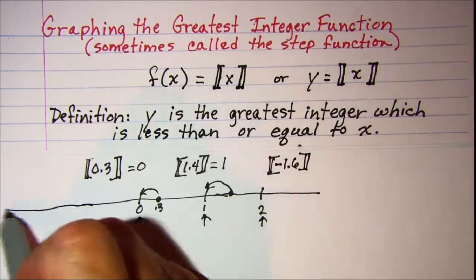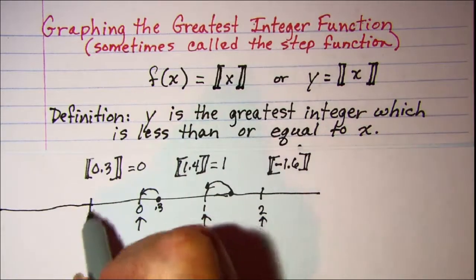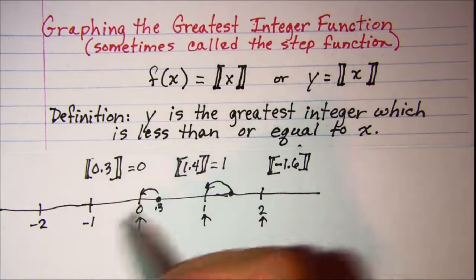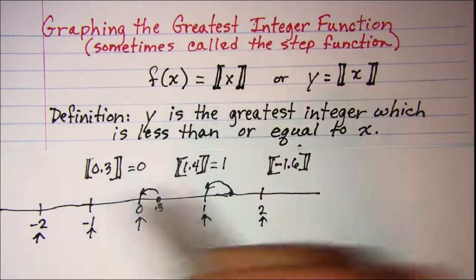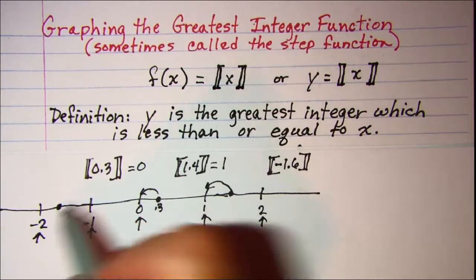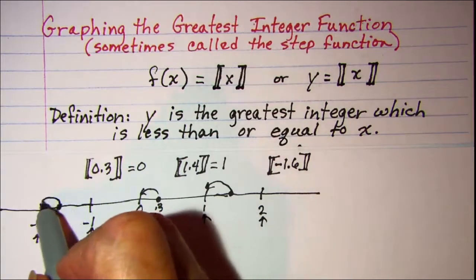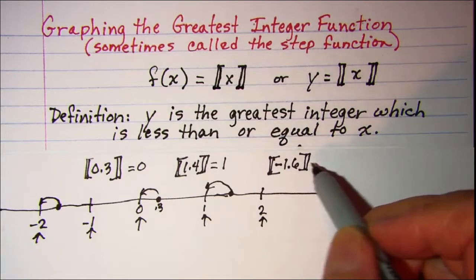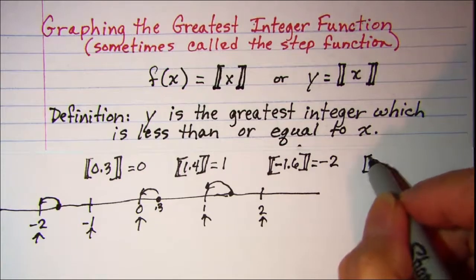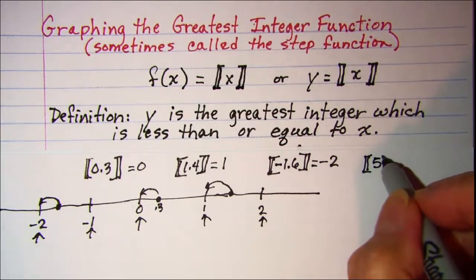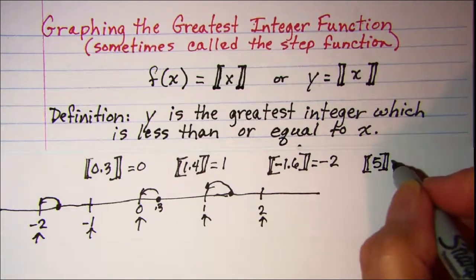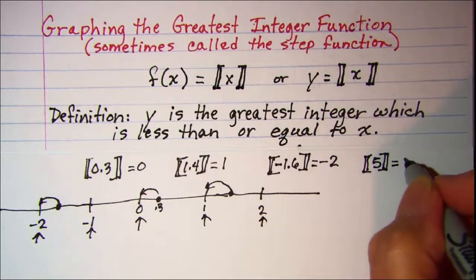Now if we looked at the greatest integer of negative 1.6, let's extend our number line to the left. Here we have negative 1 and negative 2 as integers. Negative 1.6 is about here on the number line, so the greatest integer of negative 1.6 is negative 2. And of course if we have an integer — for example 5 — in the double brackets, then the greatest integer of that integer is that integer.